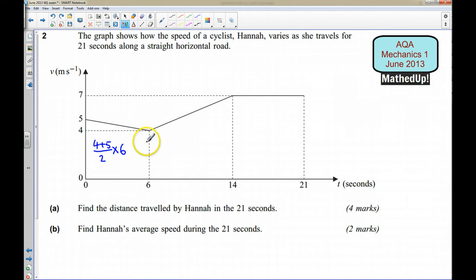Over here I'm going to do the same thing again so I've got A plus B so this time we're going to have 4 and 7 divided by 2 times by the height which this time is going to be the distance between 6 and 14 which is 8.